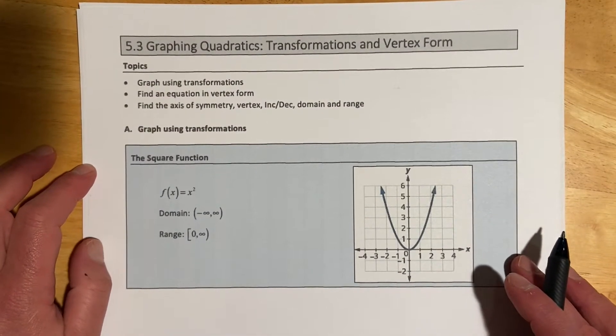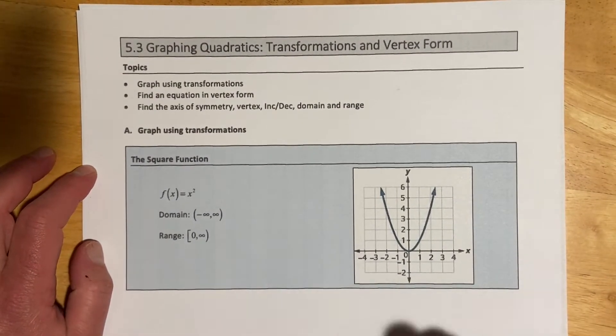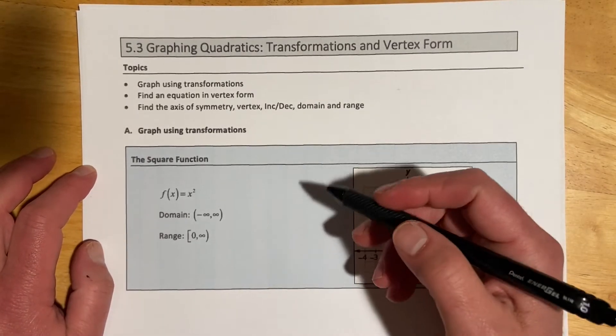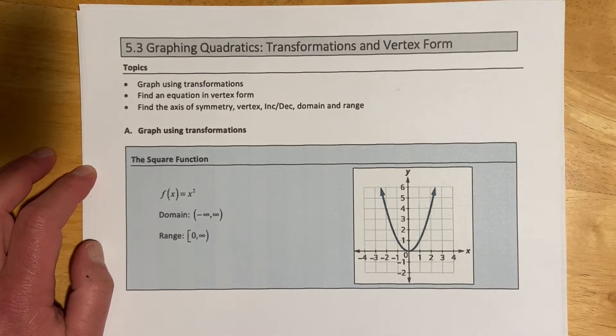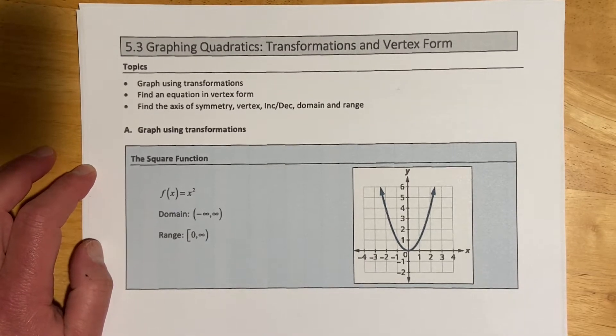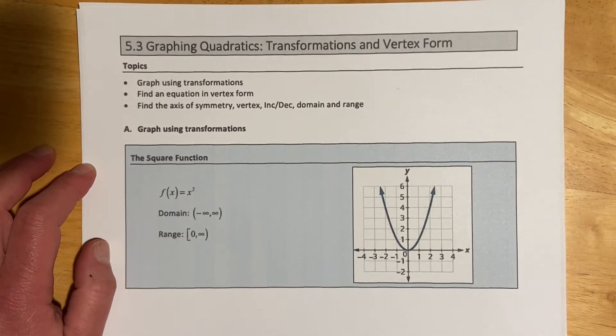Hey all, this is Derek, and this is section 5.3. This is going to be transformations on quadratics, and we're then also going to look at something called vertex form, which is kind of one of the two forms we're going to work with primarily, and this one's really convenient for graphing.